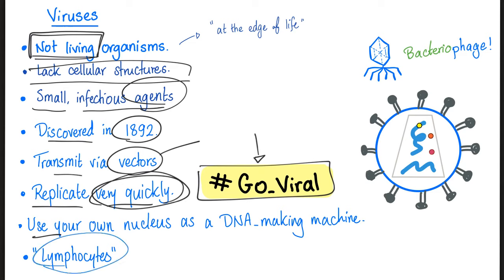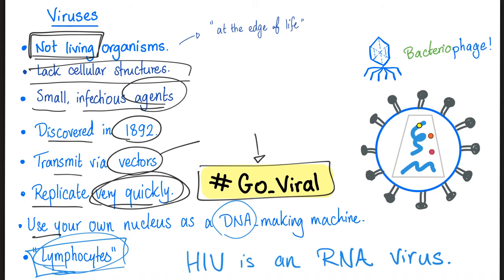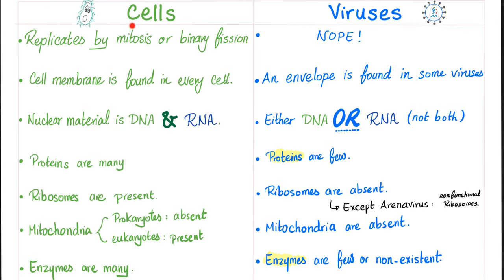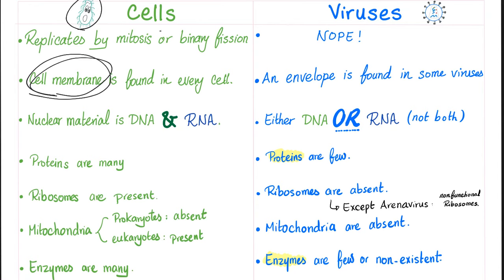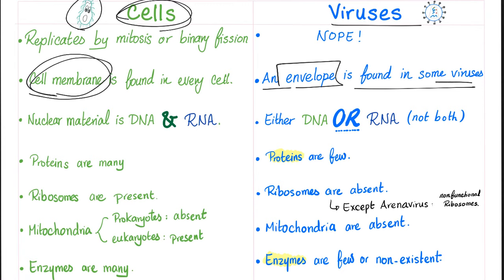For instance, HIV infects your T lymphocytes and uses the T lymphocyte's genetic material to make its own nucleic acid. We can compare cells and viruses in a table. Cells replicate by mitosis or binary fission; viruses do not. Cells have a cell membrane — some bacteria and fungi also have a cell wall — but bacteria, fungi, parasites, and human cells all have a cell membrane. Viruses sometimes have an envelope, but not all of them.